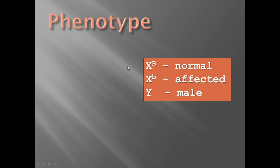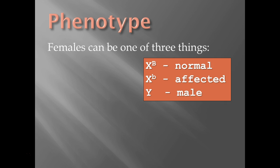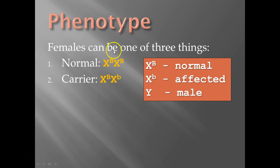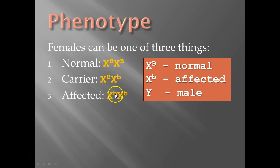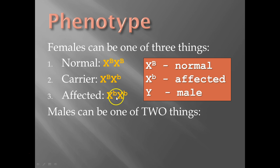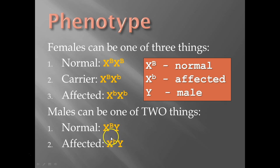Females can be one of three things: they can be normal — two normal copies of the X chromosome; they can be a carrier — they aren't affected by the disease or trait, but they carry it; or they can actually be affected, which doesn't happen very often. So females: normal (X^B X^B), carrier (X^B X^b), or affected (X^b X^b). Men, however, can only be one of two things: normal (X^B Y) or affected (X^b Y). Remember, no backup. Women — one of three things: normal, carrier, or affected. Men — normal or affected.